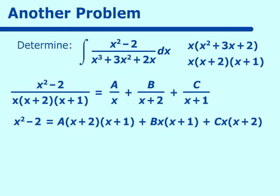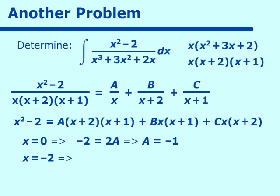Using substitution is the simplest method. Setting x equal to 0, the b and c terms cancel, leaving negative 2 equal to 2a, so a equals negative 1. Setting x equal to negative 2, the a and c terms cancel, and we get negative 2 squared minus 2, which is 2, equal to 2b, so b equals 1.